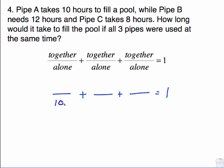Pipe A takes 10 hours, meaning 10 hours alone. Pipe B takes 12. Pipe C takes 8. They are going to work together the whole time, so each of these numerators is x. I have fractions.